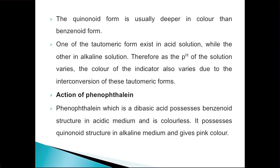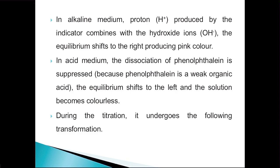This is also explained with the help of an example — phenolphthalein. Phenolphthalein is a dibasic acid and it possesses a benzenoid structure in acidic medium and will be colorless. It possesses a quinonoid structure in alkaline medium and gives a pink color. In alkaline medium, the H⁺ ions produced by the indicator combine with hydroxide ions and the equilibrium shifts towards the right, producing a pink color.